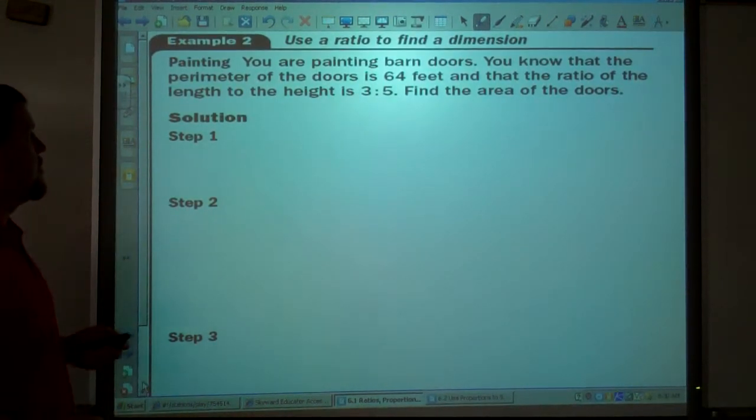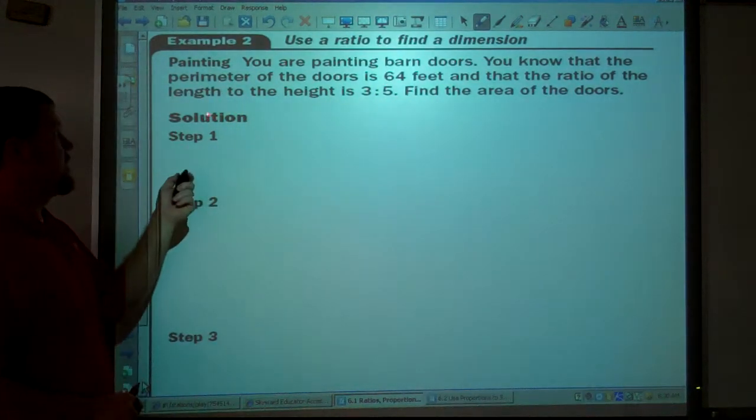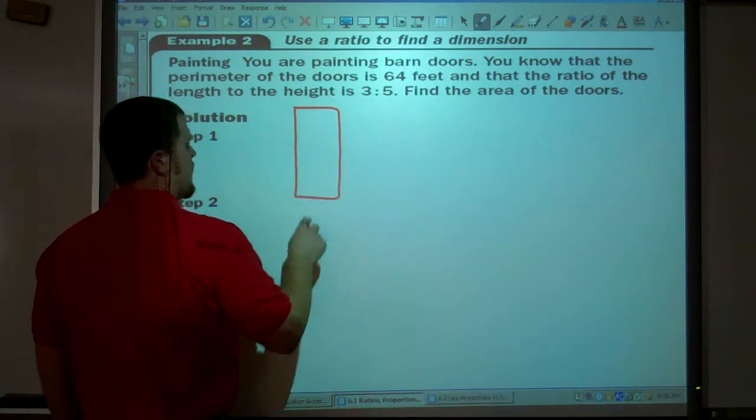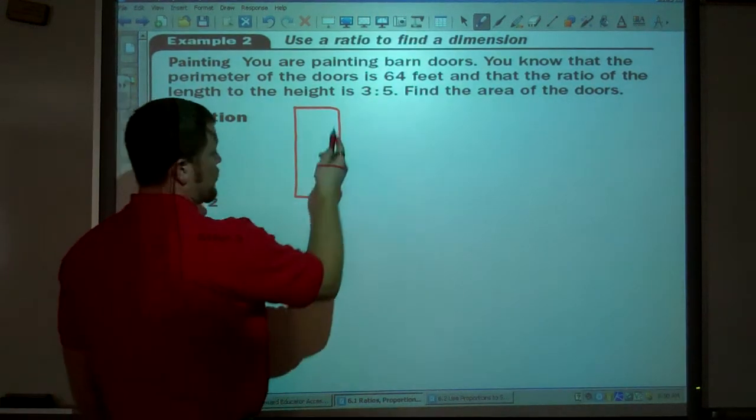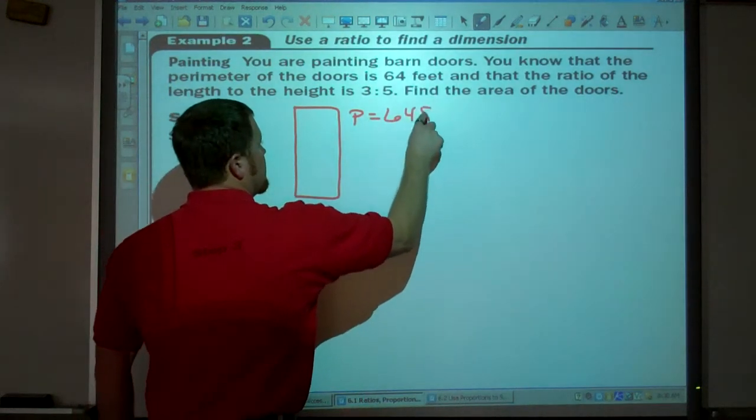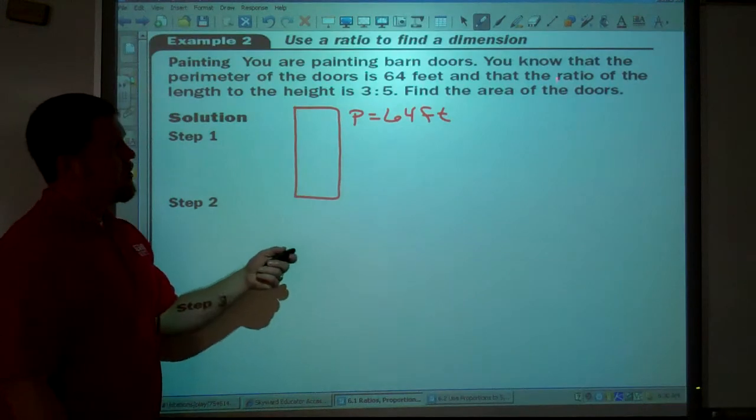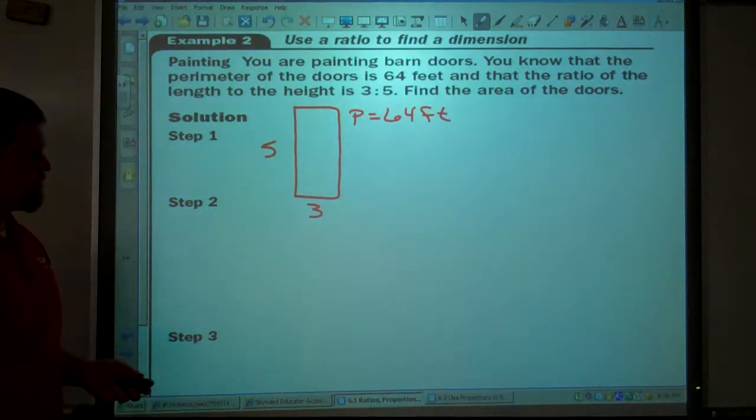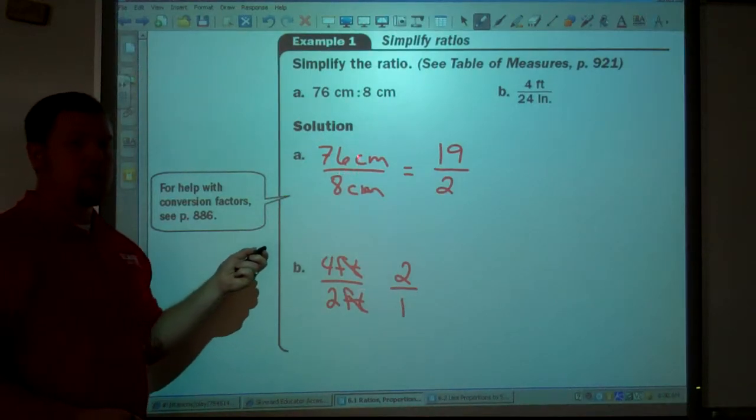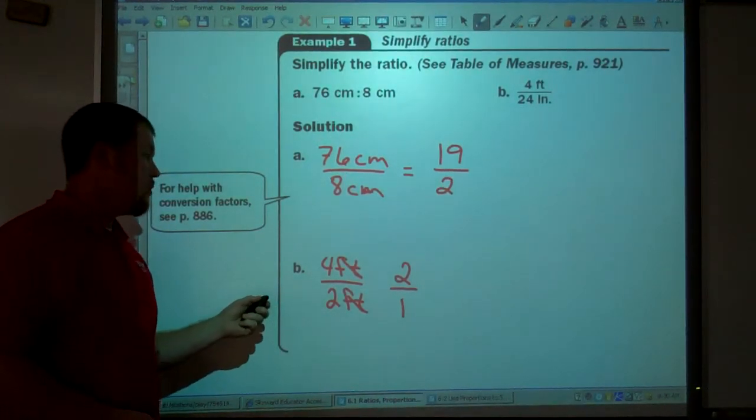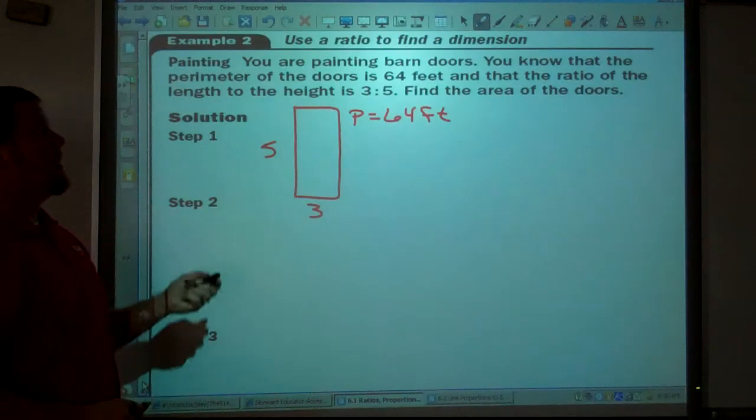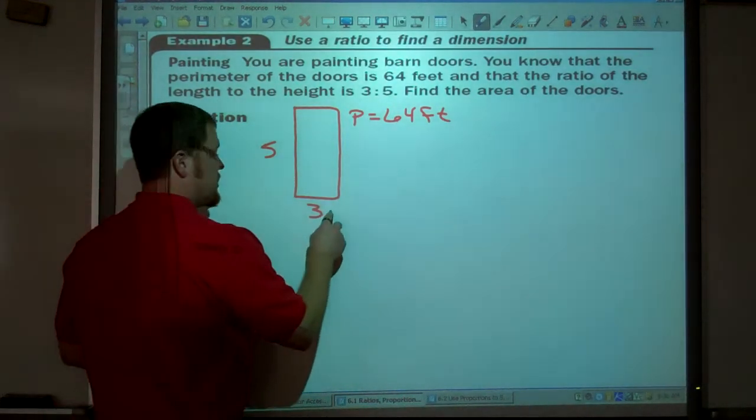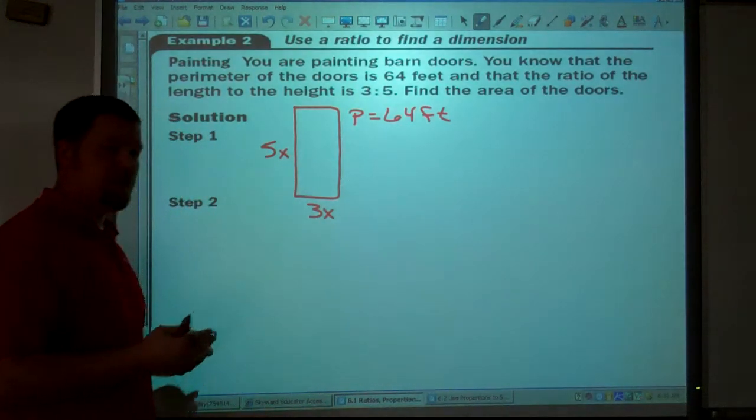Painting. You're painting barn doors. You know that the perimeter of the doors is 64 feet and that the ratio of the length to the height is 3 to 5. Find the area of the doors. So the first thing, I'm drawing a barn door, or doors, plural. The perimeter is 64 feet. The ratio of the length to the height is 3 to 5. Now, if we think about it, we just got done simplifying ratios here, right? What did we do? We looked for a greatest common factor and divided that out. Well, that's what this is. When you're given a ratio, it's in simplest form, meaning something has been divided out, and it's the same number from both terms. So it's 3x and 5x. We don't know what that number's been divided out.